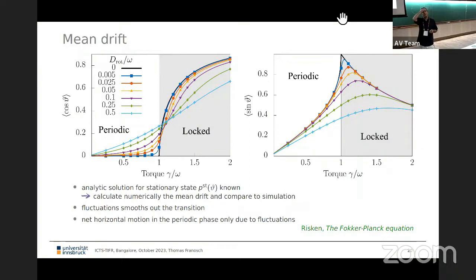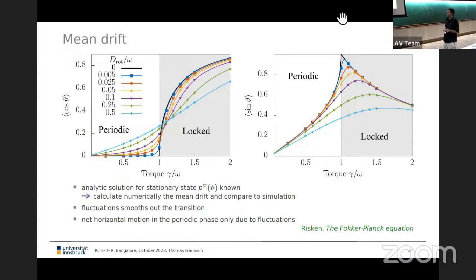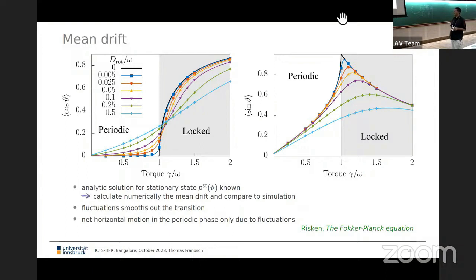The mean velocity — mean cosine and mean sine of the orientation — can be calculated analytically (following Risken's Fokker-Planck equation treatment of the tilted washboard potential). Without noise (black line): mean cosine-direction drift is zero in the locked phase, then grows as a square root above the bifurcation. The mean sine shows a cusp at gamma = omega. Adding rotational diffusion blurs these sharp features; all quantities can be calculated from the stationary distribution function.